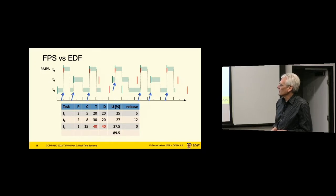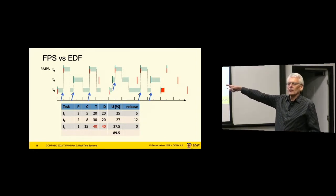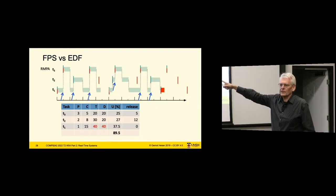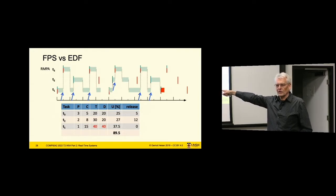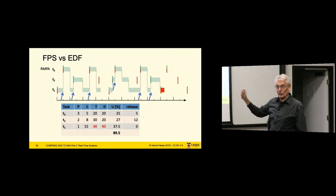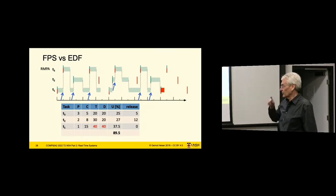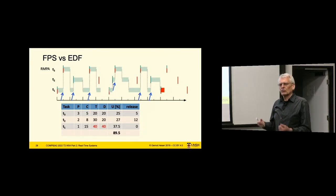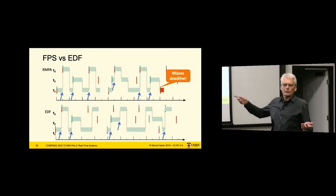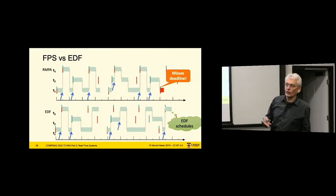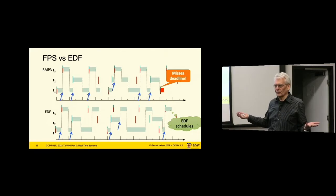If I increase the utilizations, we're now in a domain where we cannot schedule this task set with fixed priorities — in particular, rate monotonic fails. If you play it through, eventually T1 misses its deadline, which is not surprising because total utilization is above the bound which rate monotonic promises to be always schedulable — in this case approximately 82%. We get a deadline violation. If we do the same with EDF, it will happily schedule that task set, which is not surprising because the overall utilization is less than 100% and EDF has a schedulability bound of 100%. So it schedules it. That's a really good point for a break.